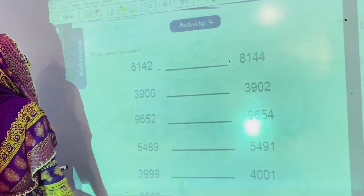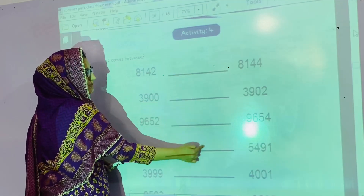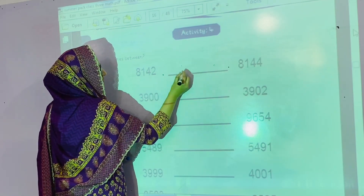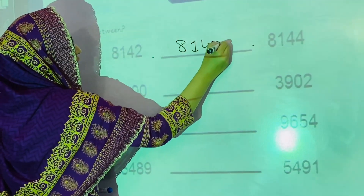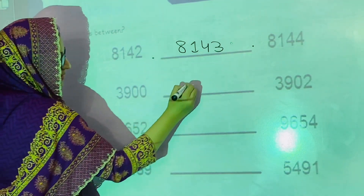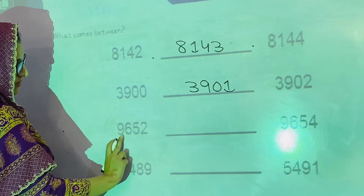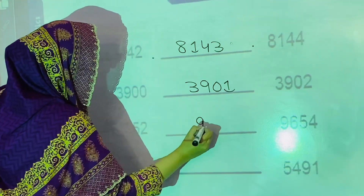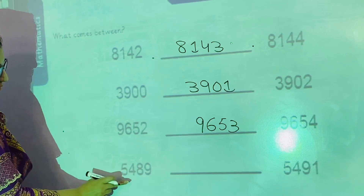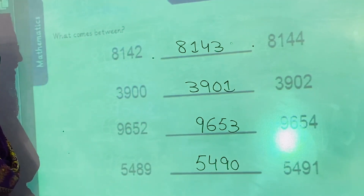Now we have activity number 4: what comes between these numbers? You have two numbers and you have to write the number that comes between them. This is 8,142 — what comes after? 8,143, then 8,144. Then 3,900 — the number is 3,901. The third one is 9,652 — what comes after? 9,653. The fourth one is 5,489, giving 5,490. In this way you will complete this activity.